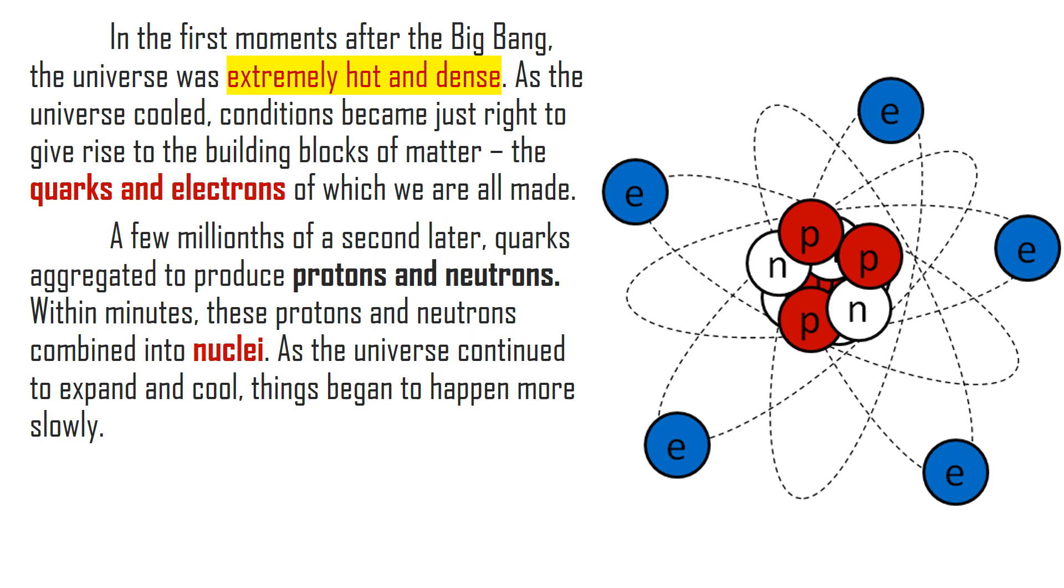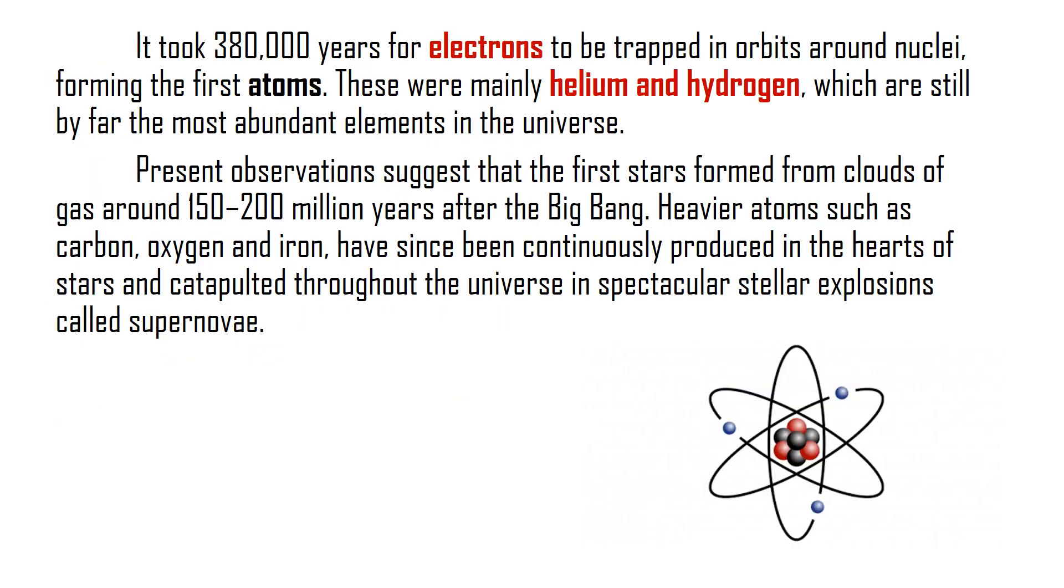But take note, we still don't have atoms here, because as you can see, we have the nuclei, which is made up of protons and neutrons, that is separated from electrons, because this time, electrons were not yet orbiting the nuclei. In order to produce the first atom, it must have the three subatomic particles. We have the electron for negative charge, proton for the positive charge, and neutron for the neutral charge. It took 380,000 years for electrons to be trapped in orbits around the nuclei, forming the first atoms. These were mainly atoms of helium and hydrogen, which are still by far the most abundant elements in the universe.